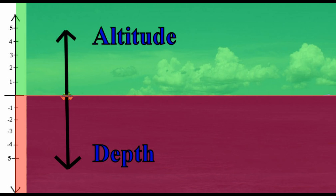But what is the opposite of altitude? Everything below the surface of the water is expressed in depth. For instance, think of a swimming pool that is ten feet deep. Depth is a lot like a negative number.